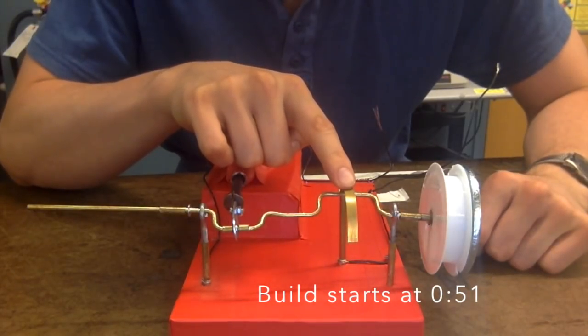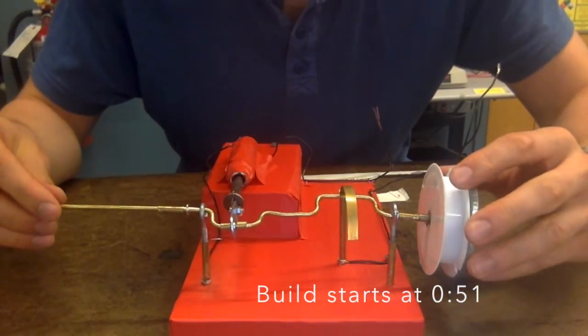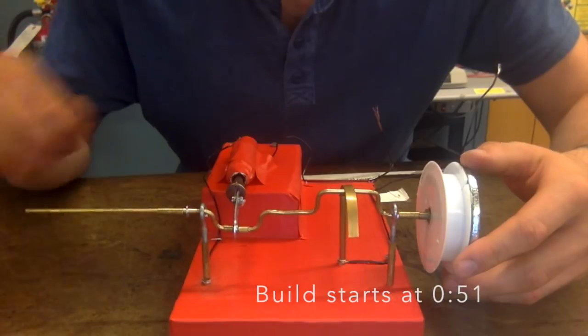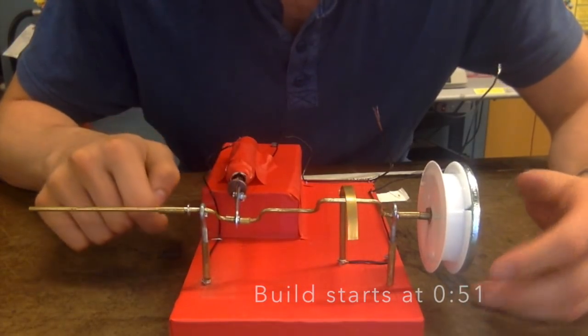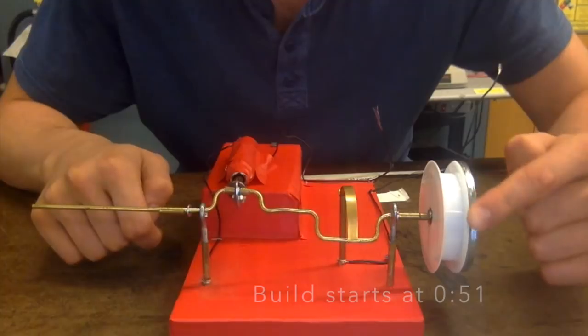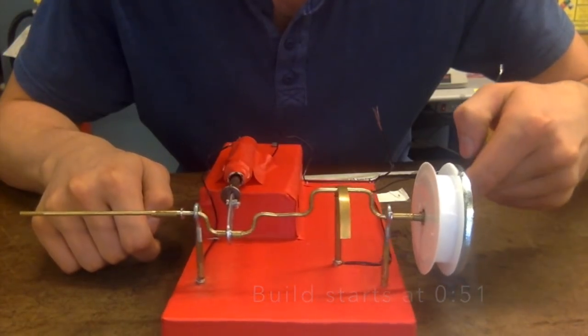This leaf controls when the circuit is connected. When the crankshaft is at the top, the circuit is closed and the pin is pulled into the solenoid. When the crankshaft is at the bottom, the momentum of the flywheel keeps it turning until the connection is made again.